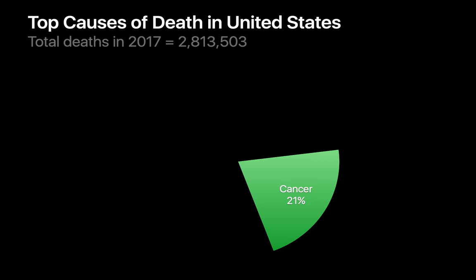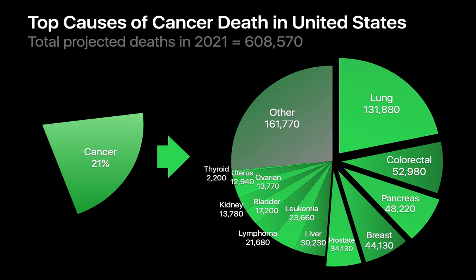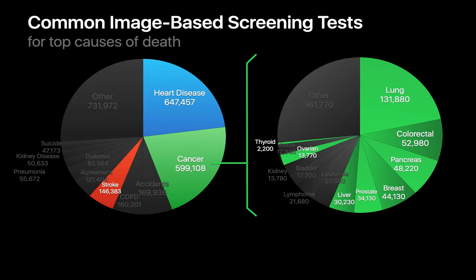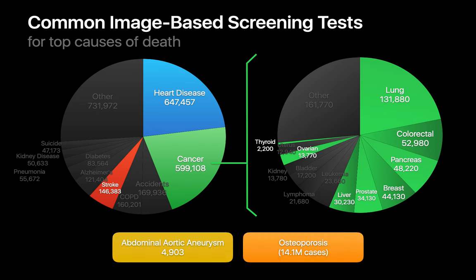Cancer is a heterogeneous pool of diseases, and lung, colorectal, pancreatic, breast, and prostate cancer are the top five causes of cancer death. So these end up being the top causes of death in the United States. And potential image-based screening exams exist for many of these conditions, in addition to a few conditions that don't appear on these pie charts, like abdominal aortic aneurysms and osteoporosis.